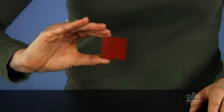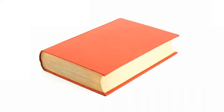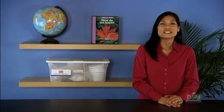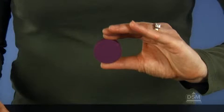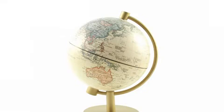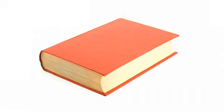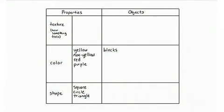Introduce another property: shape. Hold up a square block and challenge students to locate an object on their trays or in the classroom with the same shape. Students should identify that the shape of the block is square. Take this opportunity to review other shape terms such as circle, square, triangle, and diamond. Hold up a block of another shape, point to several classroom objects, and have students tell you if the block and the objects are alike or different in shape. Repeat this process with several blocks of different shapes. Add these shape words to the properties chart.